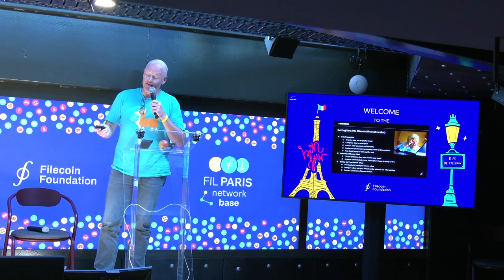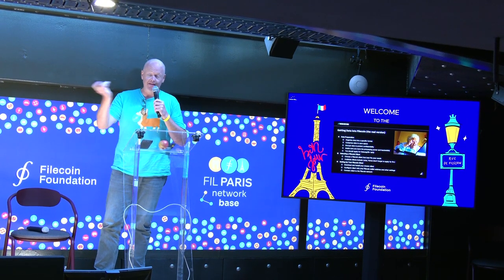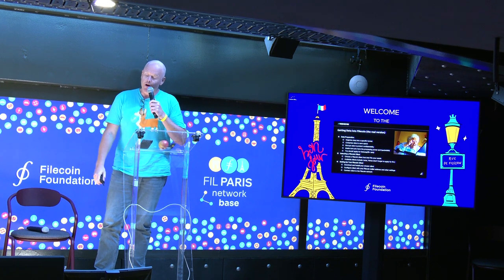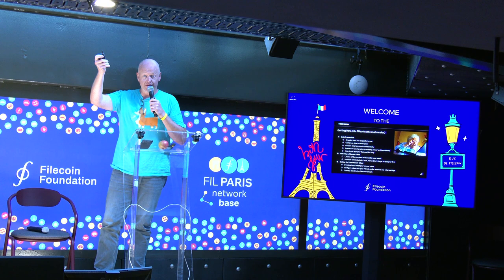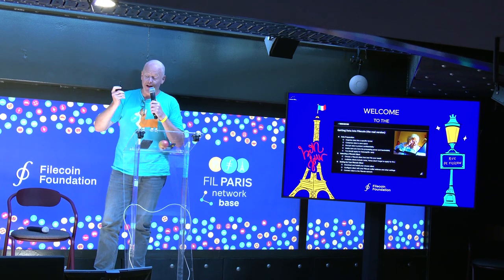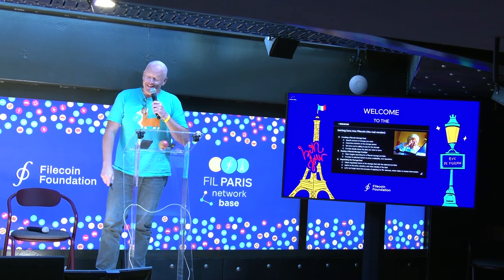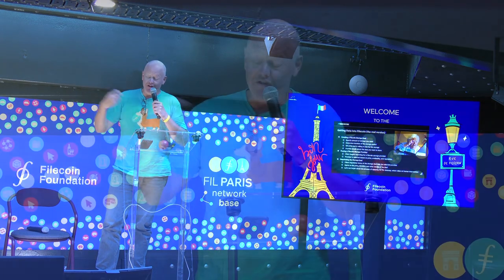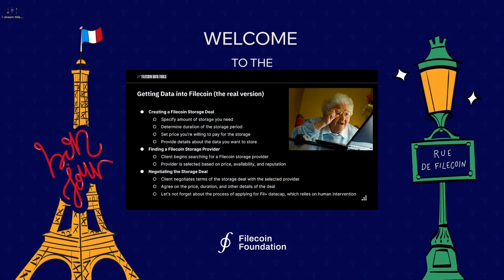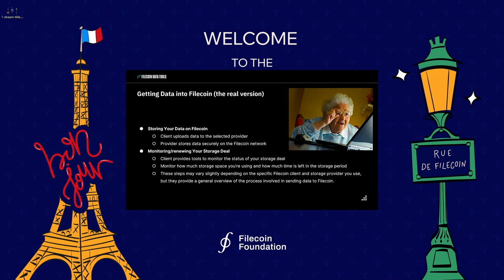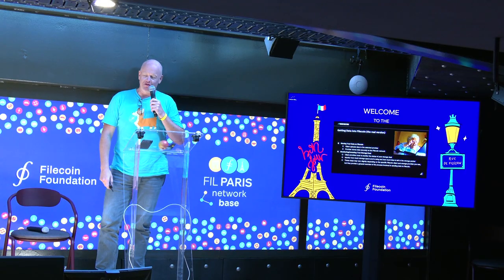Then you're going to select your Filecoin client — most people use Lotus, Venus is out there, there's also Forest. Then you set up your Filecoin client. By the way, did you set up your data cap yet? Don't forget to set up your data cap. Then you actually create the Filecoin storage deal: specify the amount, set the price, provide the details, find the storage provider, negotiate the storage deal, store the data on Filecoin, and then monitor and renew your storage data.